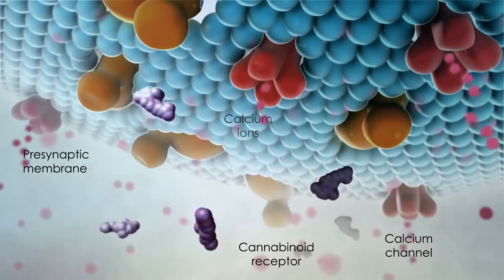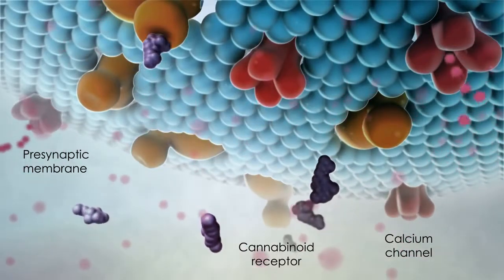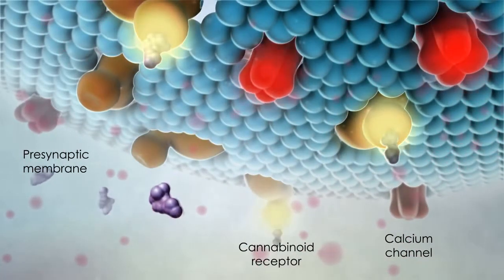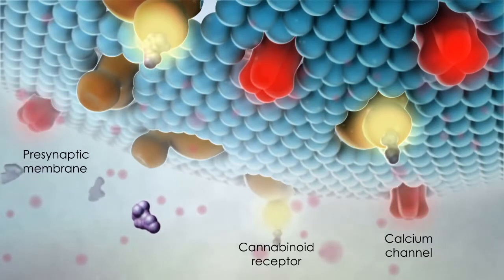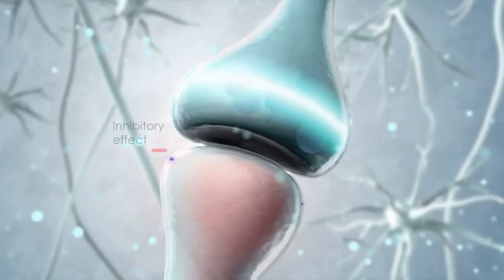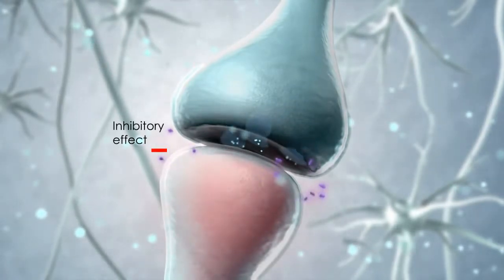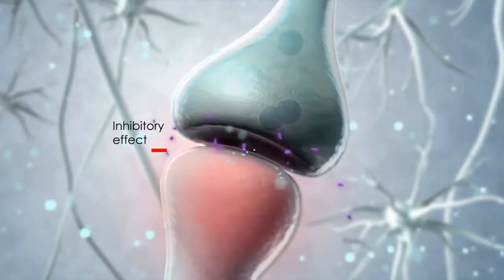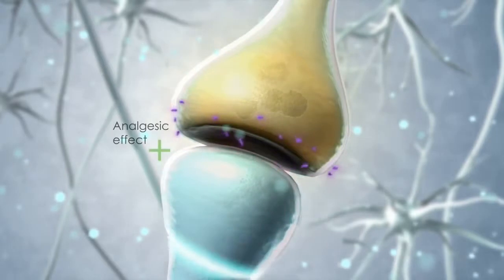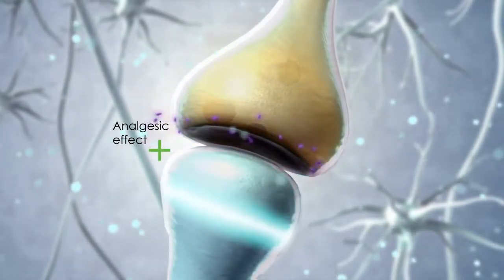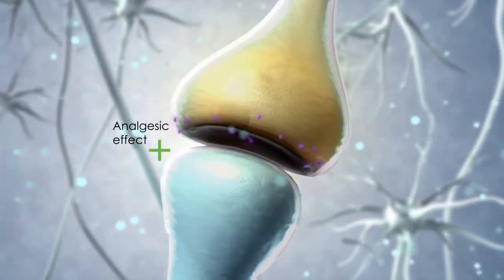Binding of the endogenous cannabinoids affects intracellular signal transduction pathways, reducing the influx of calcium ions into the presynaptic neuron, causing a decrease in further neurotransmitter release. This, in turn, influences the frequency of postsynaptic firing.